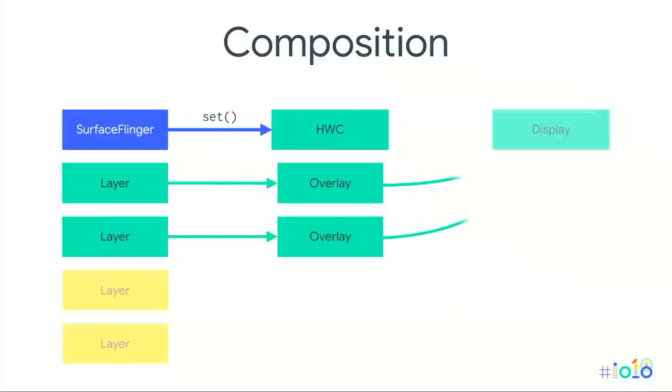If you're curious, run: adb shell dumpsys SurfaceFlinger — capital S, capital F. It will output a table of windows on screen and whether they're currently represented as overlays or framebuffer. However, run this quickly because there are many internal optimizations — if layers haven't changed for a while, the hardware composer may collapse them into a single layer. The output can be misleading, so it's best to run this during an animation or when something is changing on screen for the most valuable information.